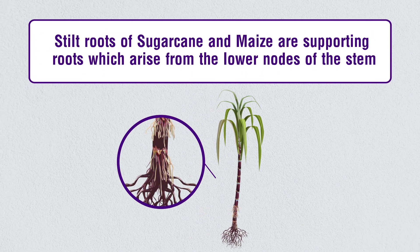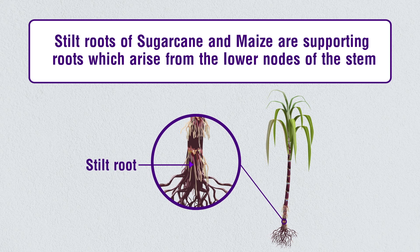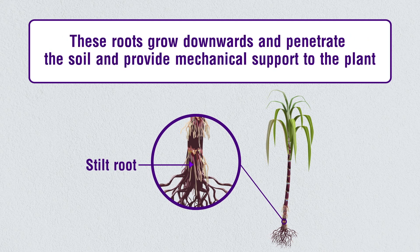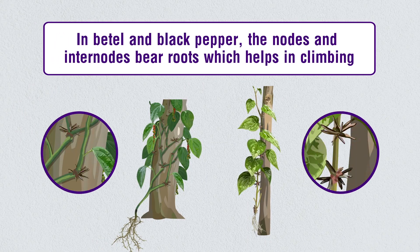Stilt roots of sugarcane and maize are supporting roots which arise from the lower nodes of the stem. These roots grow downwards and penetrate the soil, providing mechanical support to the plant. In betel and black pepper, the nodes and internodes bear roots which help in climbing.